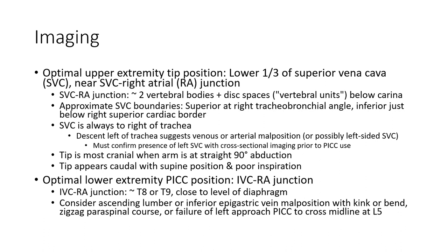The left tracheobronchial angle is a venous or arterial landmark option and is more cranial when the arm is in straight-line adduction. Tip moves up with arm down, and moves down with supine position and full aspiration.